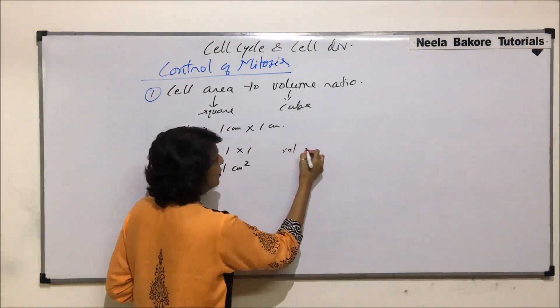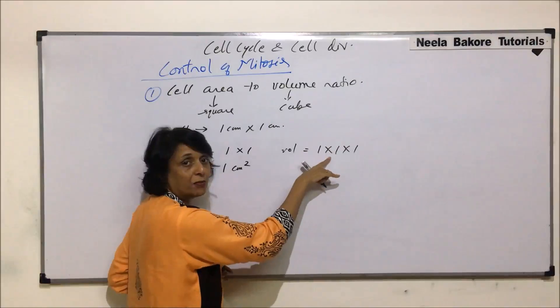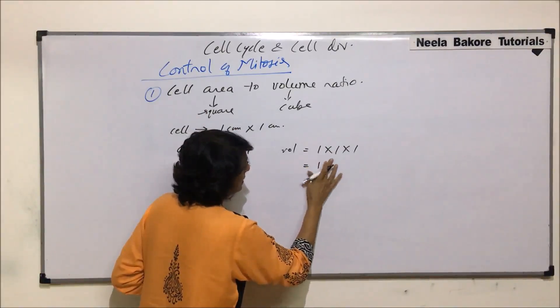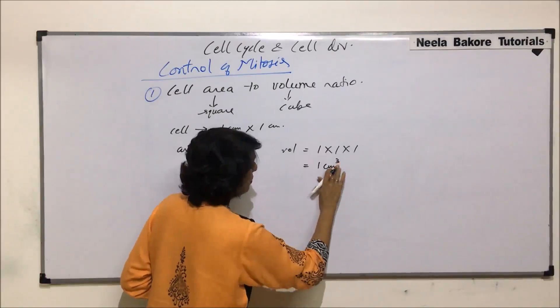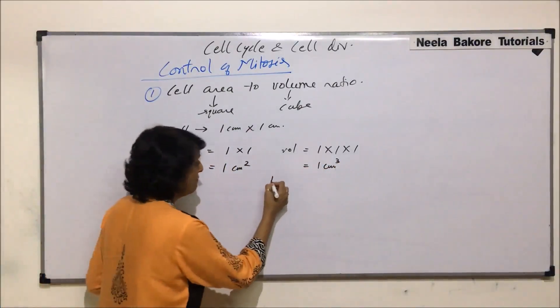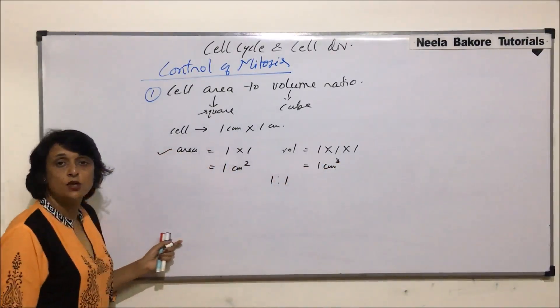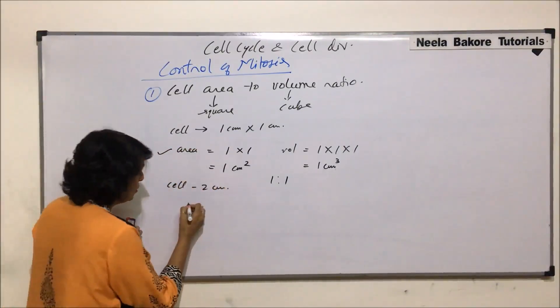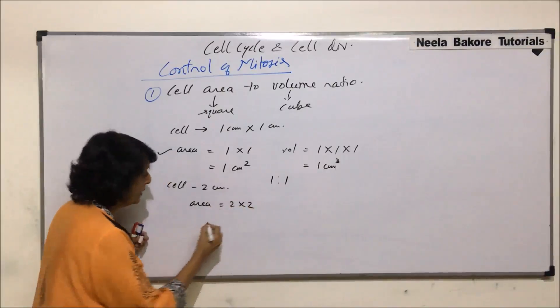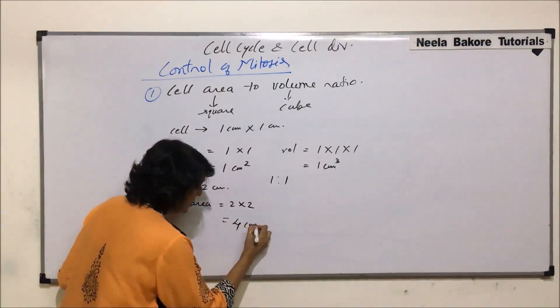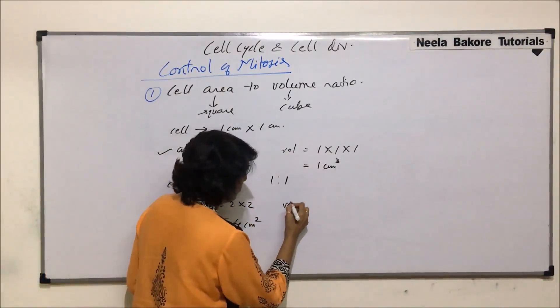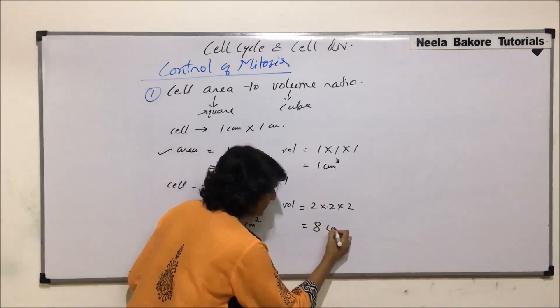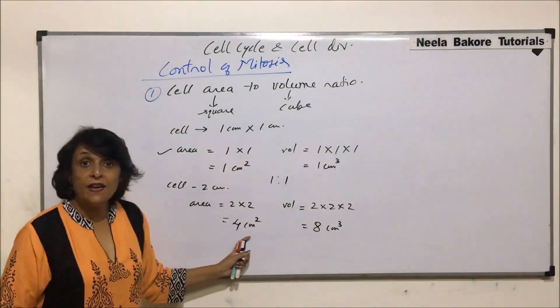So area would be calculated by 1 into 1 and that is going to be 1 square centimeters. And if we calculate the volume, it is going to be 1 into 1 into 1, that is length, breadth and height. And this is again going to be 1 centimeter square and this is centimeter cube. So this is the ratio, ratio is 1 is to 1. Now let us change the size of the cell. Say the cell is 2 centimeters in all the direction. So area would be 2 into 2 that is 4 square centimeters. And volume is going to be 2 into 2 into 2. This is going to be 8 cubic centimeters. Ratio has changed.